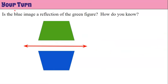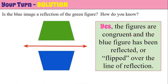Now it's your turn to identify a reflection. Is the blue image a reflection of the green figure, and how do you know? The answer is yes — the figures are congruent. The blue figure has been reflected over the line of reflection and you can see that it is flipped. The corresponding vertices are the same distance from the line of reflection. If you folded on this line, the figures would completely overlap because they're congruent.